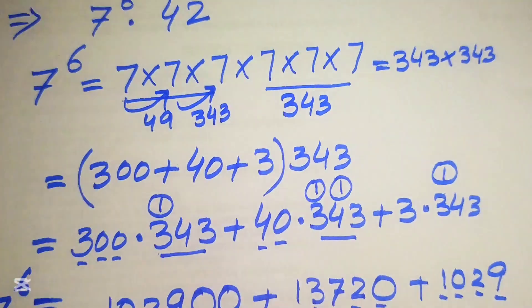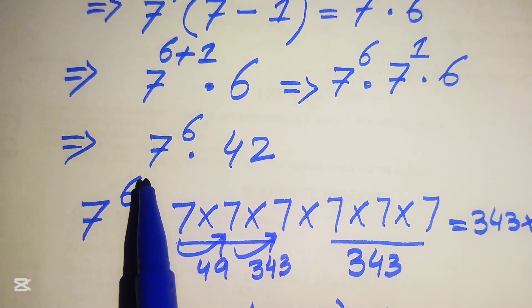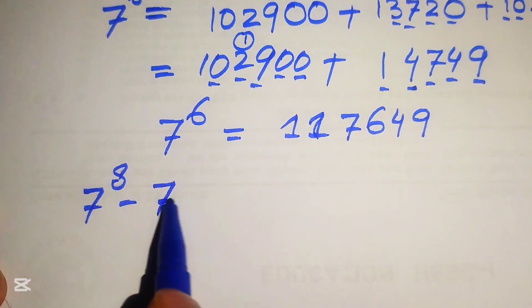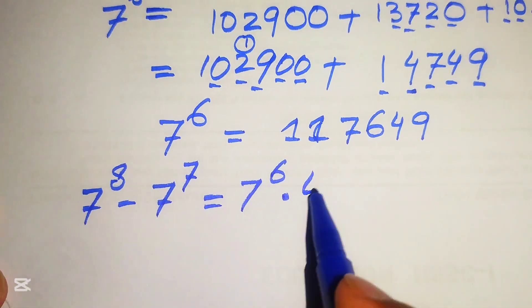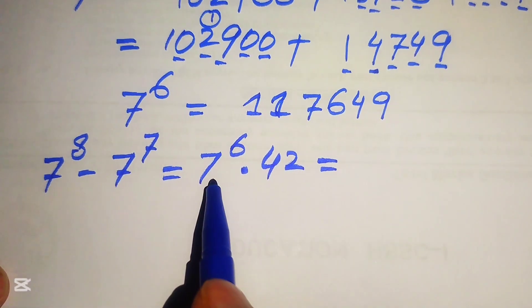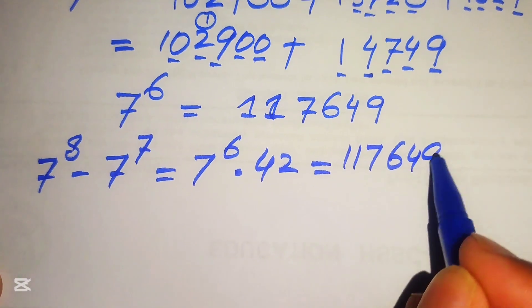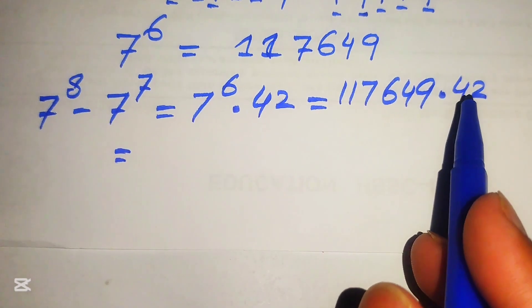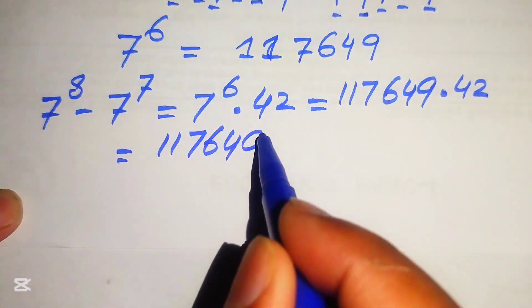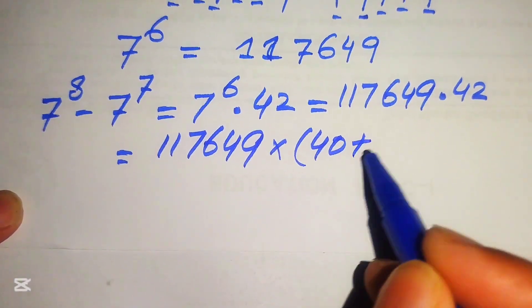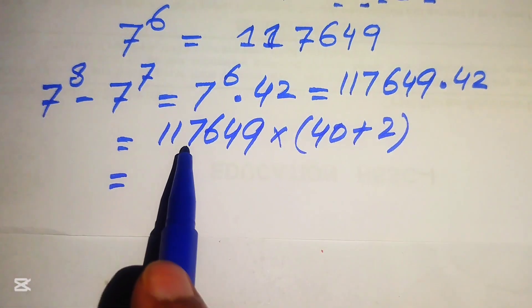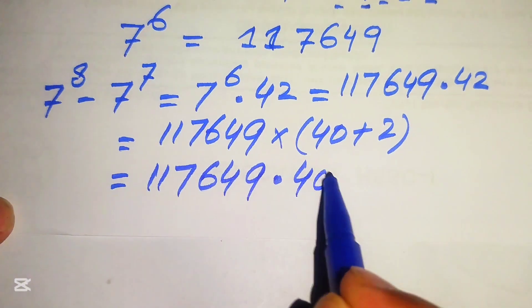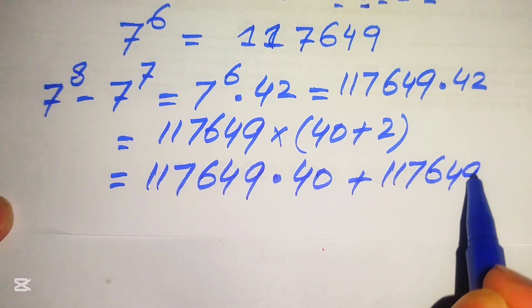We now move backward to find the value of 7 to the power of 7, which equals 7 to the power of 6 multiplied by 42. Since 7 to the power of 6 is 117,649, we need to compute 117,649 multiplied by 42. We break 42 as 40 plus 2, giving us 117,649 times 40 plus 117,649 times 2.